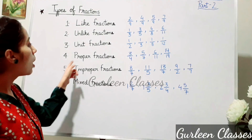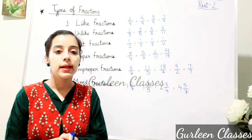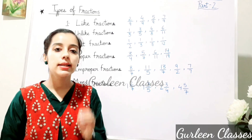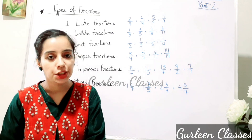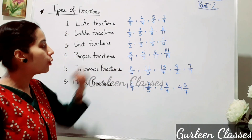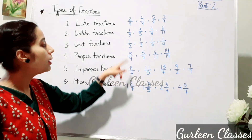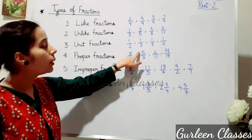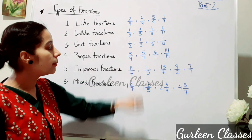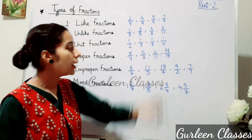Next, proper fractions. A fraction whose numerator is less than its denominator is called a proper fraction. For example: 3/4 — here numerator 3 is less than denominator 4; 5/7 — numerator 5 is less than denominator 7; and 6/11.